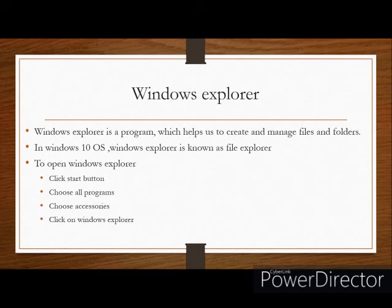In Windows 10, Windows Explorer is known as File Explorer. If your computer has Windows 10, instead of Windows Explorer you will see File Explorer. To open Windows Explorer, first click on the Start button, then select All Programs, then select Accessories, and from Accessories you can select Windows Explorer.